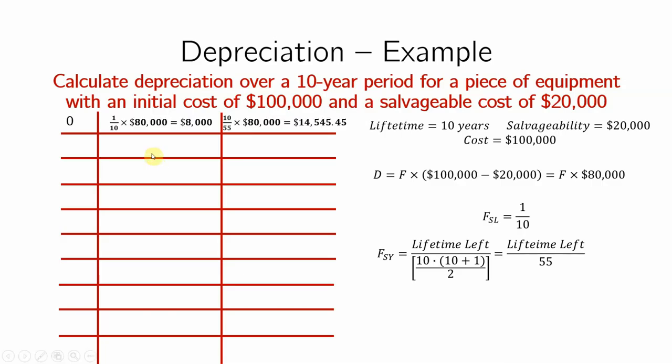For year zero, for the straight line, I'll just take 1 over 10, and I'll multiply by $80,000. So I can reduce my salary or my income by $8,000, according to the scheme. For the sum of years, my indexing will be a little different, because lifetime left at this point is 10, right? Because I have a 10-year period, and it's going to be over 55 times the $80,000 that is from here, and I get $14,545.45.